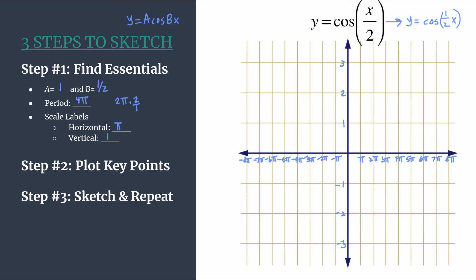Now we can move to step two. Let's plot our key points. So our cosine pattern, our original cosine pattern is always maximum, zero, minimum, zero. Okay a negative out front would flip that. We don't have a negative out front so we will stick with that original pattern. And again this works for your unshifted graphs and that's what we have here.